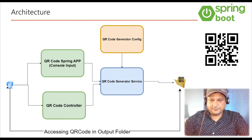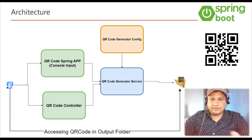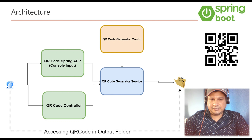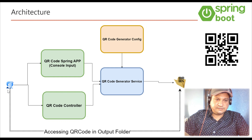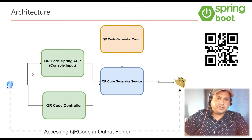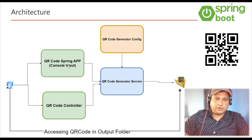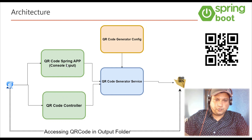Let's understand the architecture of this application. On the left side we have the user, who has two ways to generate the QR code: through console input or through the QR code controller, which is our REST controller via API. The user can choose either channel to generate a QR code. Once input is given — say through the console — it will come to our business layer class, the QR code generator service, which is where our business logic lives.